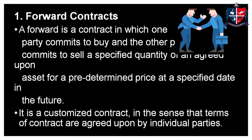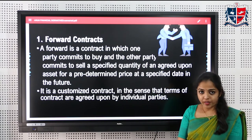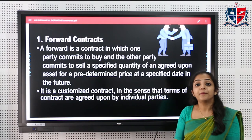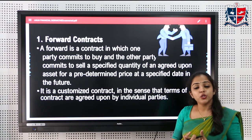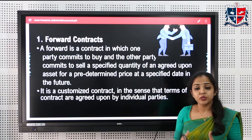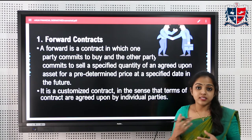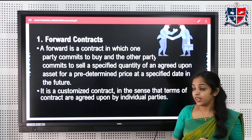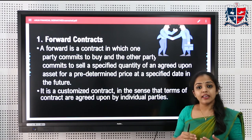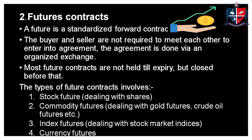The first type of derivative is the forward contract, which is a tailor-made or customized OTC contract. The buyer and seller agree on a price and a date for the transaction, and both parties are obligated to exercise the contract. In a forward contract, delivery of the asset takes place.